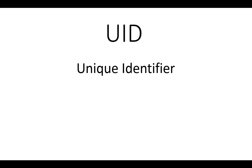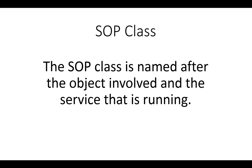Unique Identifier — your social security number is a unique identifier; it's a number that identifies you to a system. In DICOM, a unique identifier is a string of numbers unlike any other, tied to a particular service or data object.